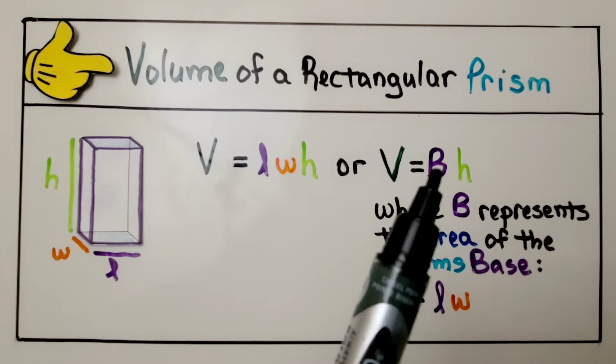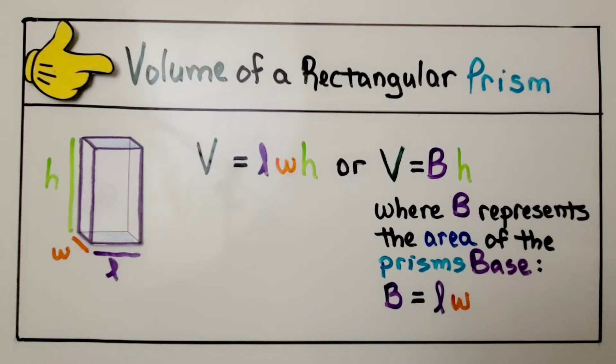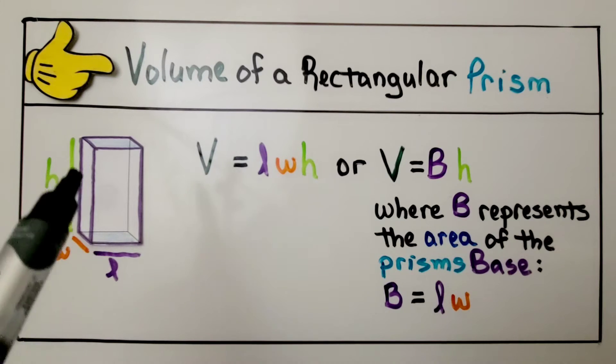Or we could do V for volume is equal to base height. Notice this is a capital B. That's where this capital B represents the area of the prism's base, the length times the width. We do the length times width for this blue base down here, and then we just multiply it by the height.